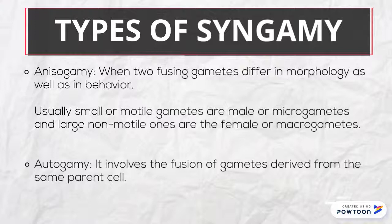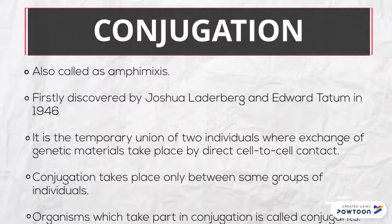Autogamy involves the fusion of gametes derived from the same parent. Conjugation is a temporary union of two individuals where an exchange of genetic material takes place by direct cell-to-cell contact. Conjugation takes place only between the same groups of individuals, and organisms which take part in conjugation are called conjugants.